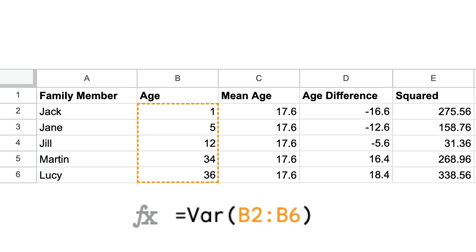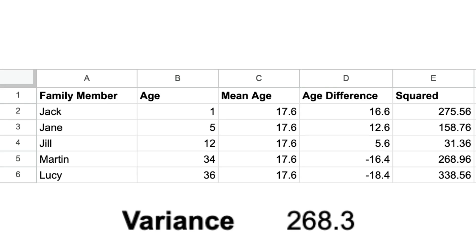In Excel or Google Sheets we can also simply use the var function and select your data points of interest. This will give us the variance of the age for this family, which is 268.3.